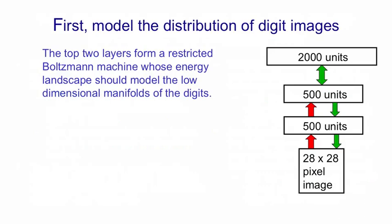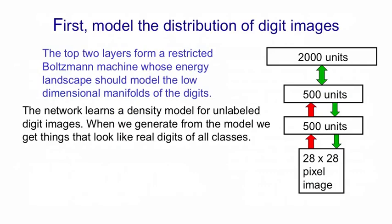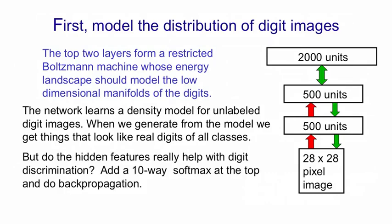So let's apply this to modeling the MNIST digits. We'll learn three hidden layers of features entirely unsupervised. Once we've done that learning, when we generate from the model it will generate things that look like real digits from all the different classes, and it will typically take a while before it switches from one class to another because it tends to stay in the same ravine before jumping to another. The question is: are the features learned that way useful for doing discrimination? All we need to do is add a final 10-way softmax at the top, fine-tune it with backpropagation, and see if we do better than purely discriminative training.